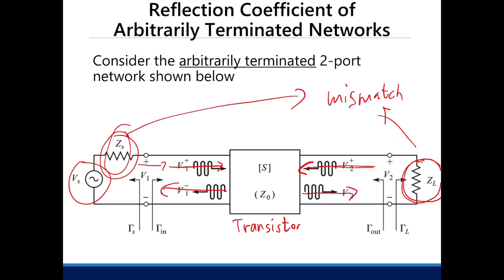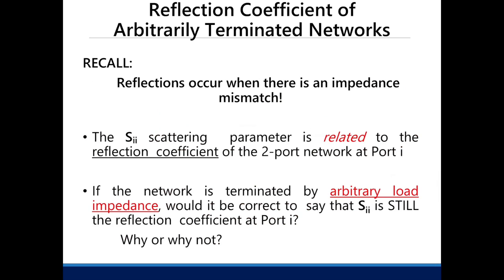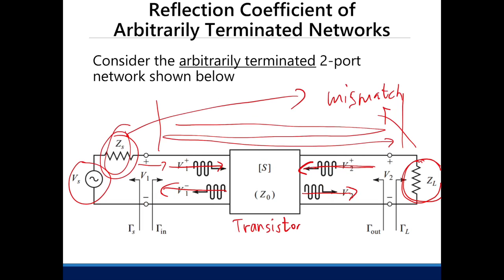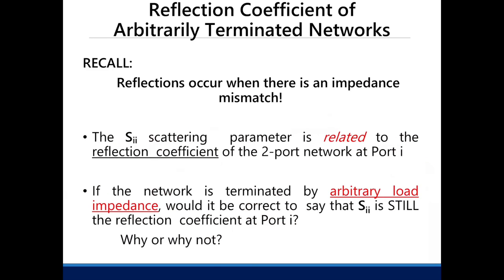So basically, you're just reflecting power between both sides, going back and forth — it's like ping pong. If there's mismatch, reflections are occurring, and your signal will just go back and forth between your load and your source. It could create a large signal and render your amplifier unstable — an operating point that we do not desire at all.